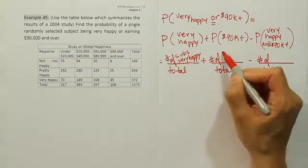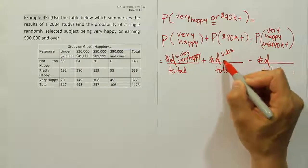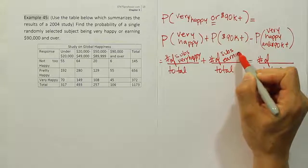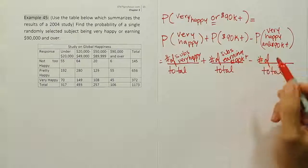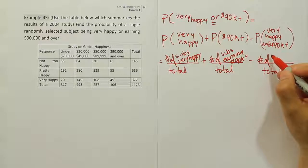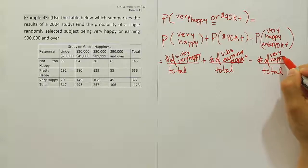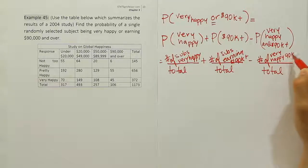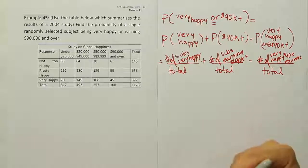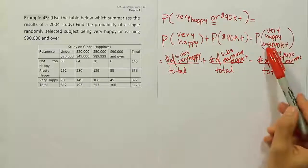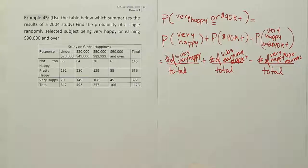The second fraction is the number of subjects earning 90K or more per year over the total. And the third fraction is the number of very happy 90K earners — that blends both categories together. Now all the thinking is done and we can just put numbers in.